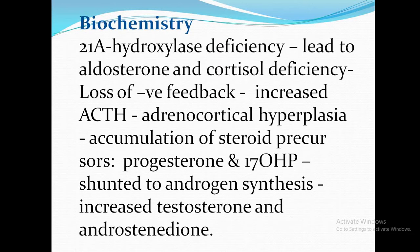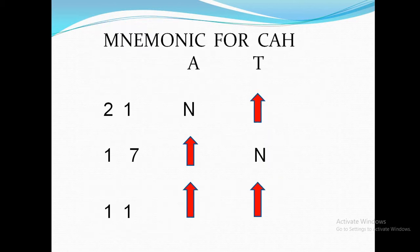21-alpha hydroxylase deficiency leads to reduced aldosterone and cortisol, causing loss of negative feedback and hence increased ACTH secretion. This leads to adrenocortical hyperplasia, resulting in accumulation of steroid precursors — especially progesterone and 17-hydroxyprogesterone — which are shunted to androgen synthesis, resulting in increased testosterone and androstenedione. This is the mechanism by which androgens are elevated in 21-alpha hydroxylase deficiency.